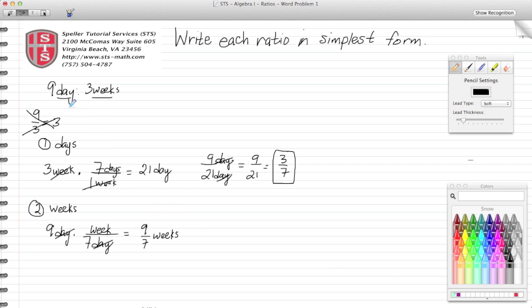Using that, I create a complex fraction. So I start with my numerator of 9/7 weeks and my denominator of three weeks. Again, my units cancel.